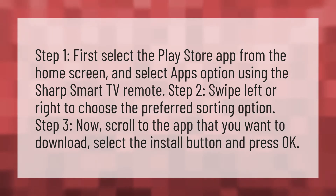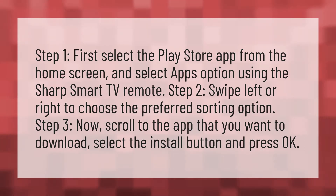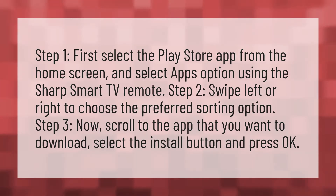Step 1: First select the Play Store app from the home screen and select the Apps option using the Sharp Smart TV remote. Step 2: Swipe left or right to choose the preferred sorting option.